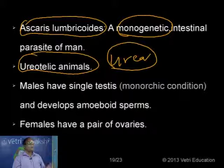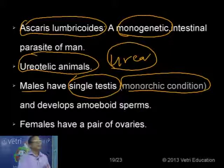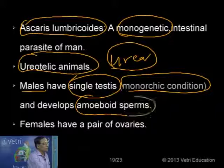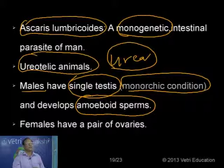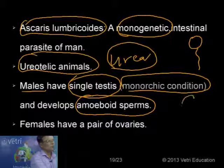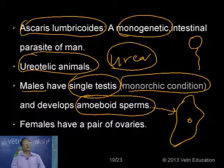Regarding the reproductive organs in Ascaris: the males have only one testis — this condition is called the monorchid condition. Normally we have a pair of testis in animals, but here only one. If you have only one out of two, the condition is called monorchid. The sperm is also peculiar — it is normally amoeboid, unlike the typical motile sperm with a tail. The sperm of roundworms is amoeboid.